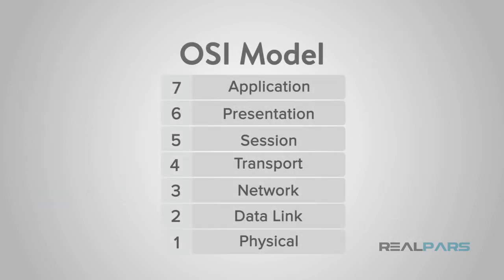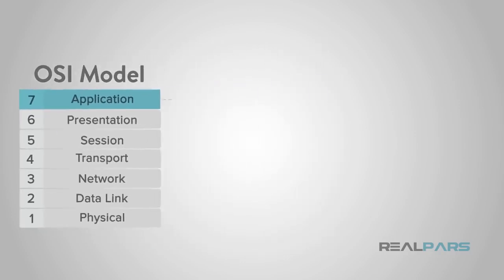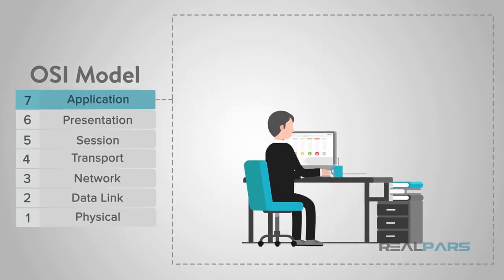We'll describe the layers from the top down, as the top layer is the application layer, or layer 7. This is the layer that most users interact with and will recognize. The application layer provides network services to the end user. These services are protocols that work with the data the client is using.